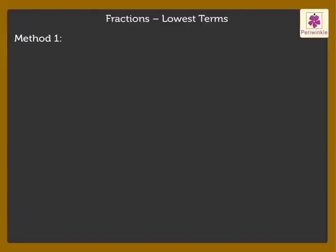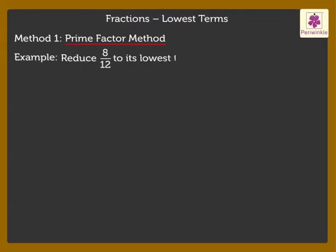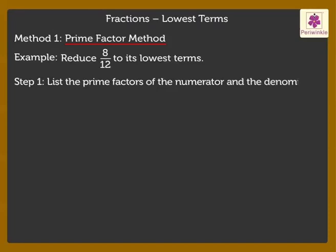Method 1: Prime Factor Method. Reduce 8 upon 12 to its lowest terms. Step 1: List the prime factors of the numerator and the denominator. Thus, 8 upon 12 is equal to 2 into 2 into 2 upon 2 into 2 into 3.